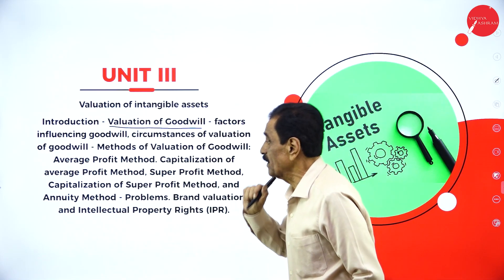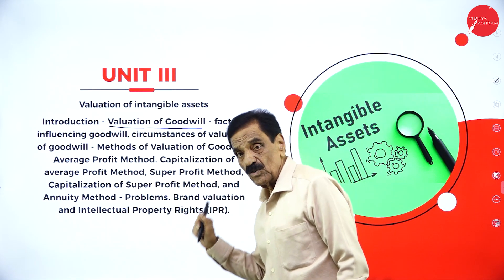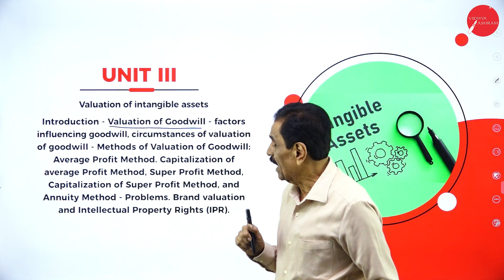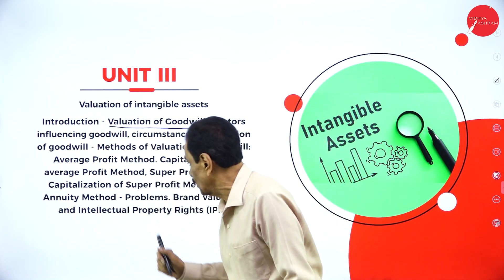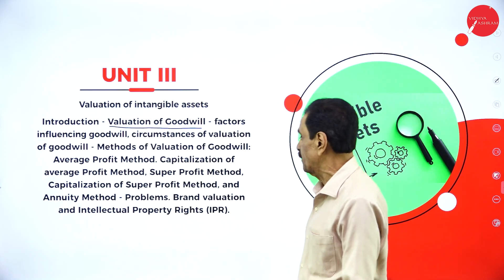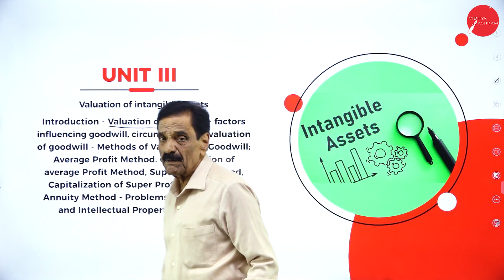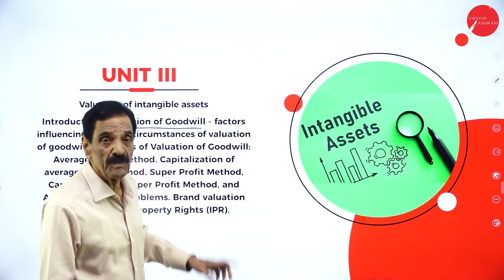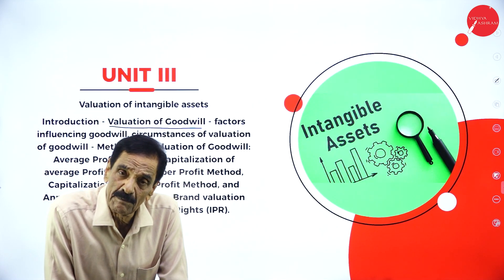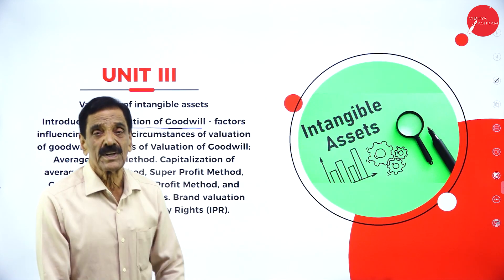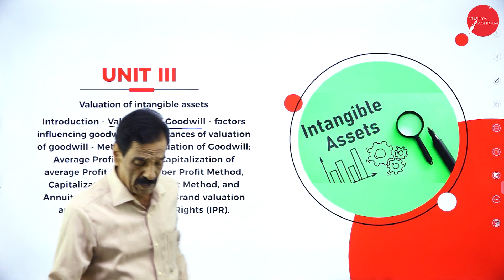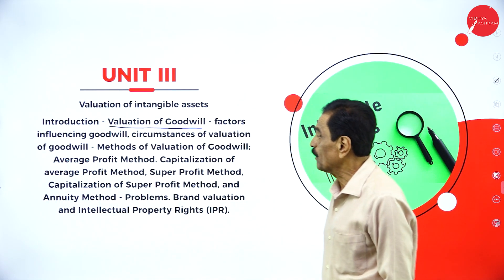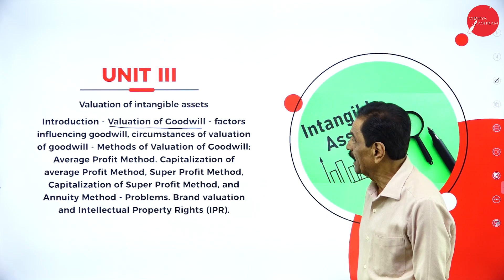For Unit 3, you have to calculate the Super Profit Method, the Annuity Method, and the Capitalization of Super Profit Method. Goodwill is an intangible asset which cannot be seen or touched. We will go into detail while solving the problems.